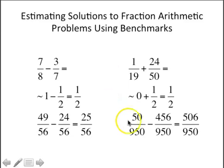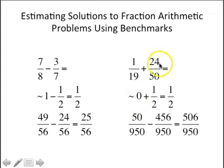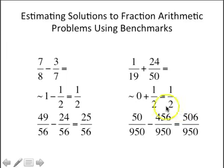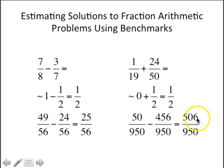Here's another example: one-nineteenth plus 24-fiftieths. Using benchmarks, one-nineteenth is a very small number, about zero; 24-fiftieths is really close to one-half. So zero plus one-half gives me one-half. If I were to do the actual computation, I would end up with a common denominator of 950, and my fractions would convert to give a solution of about 500 over 950. Five-hundred out of a thousand would be one-half, so 500 out of 950 is really close to one-half — my estimation was really useful.